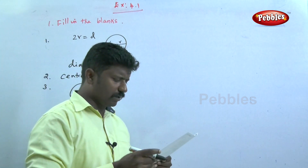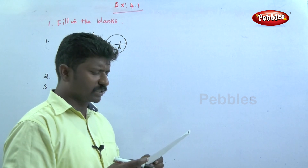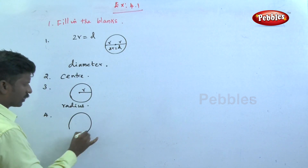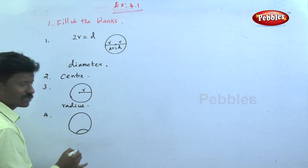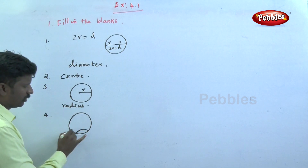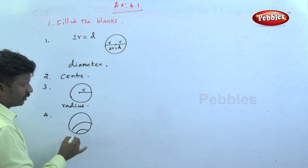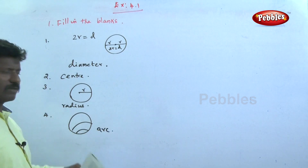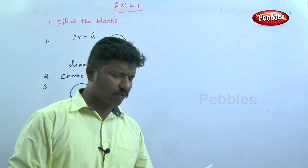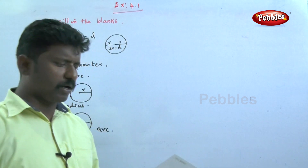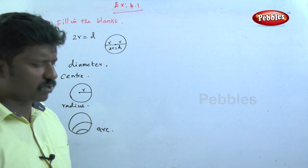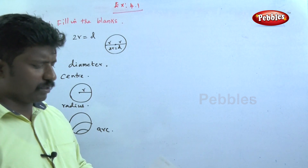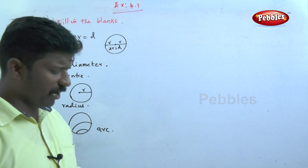The fourth one: a part of the circle between any two points is called dash of the circle. A part of the circle — the name for that is arc. So a part of a circle between any two points is called dash of the circle — that is arc of the circle.